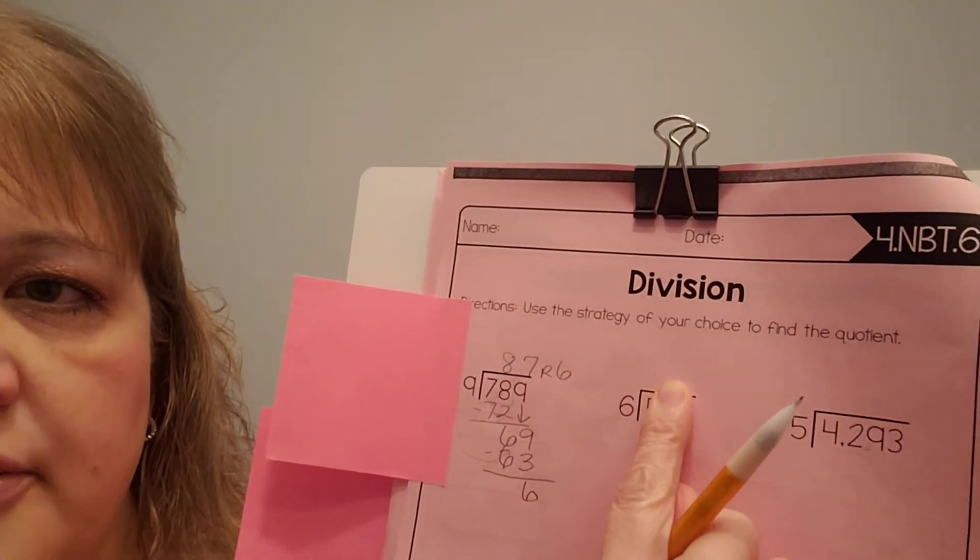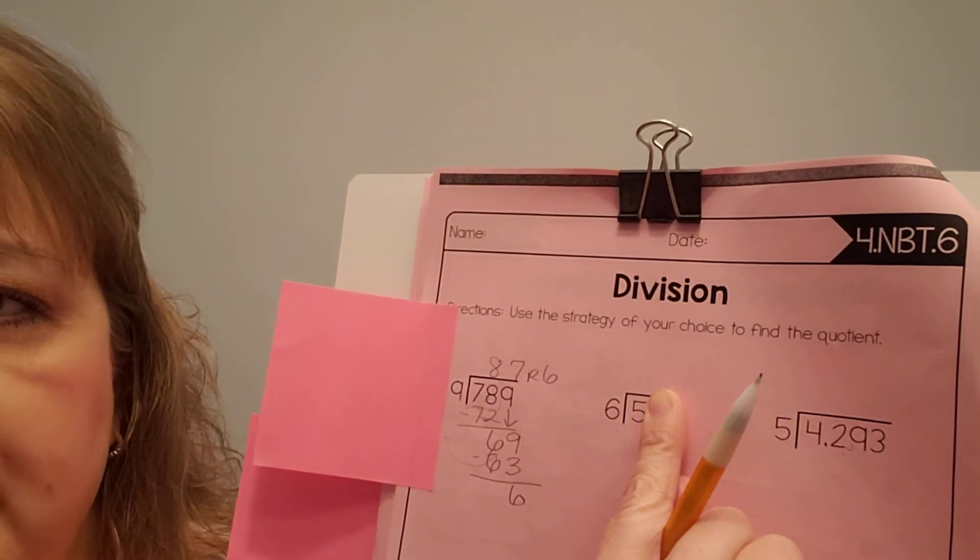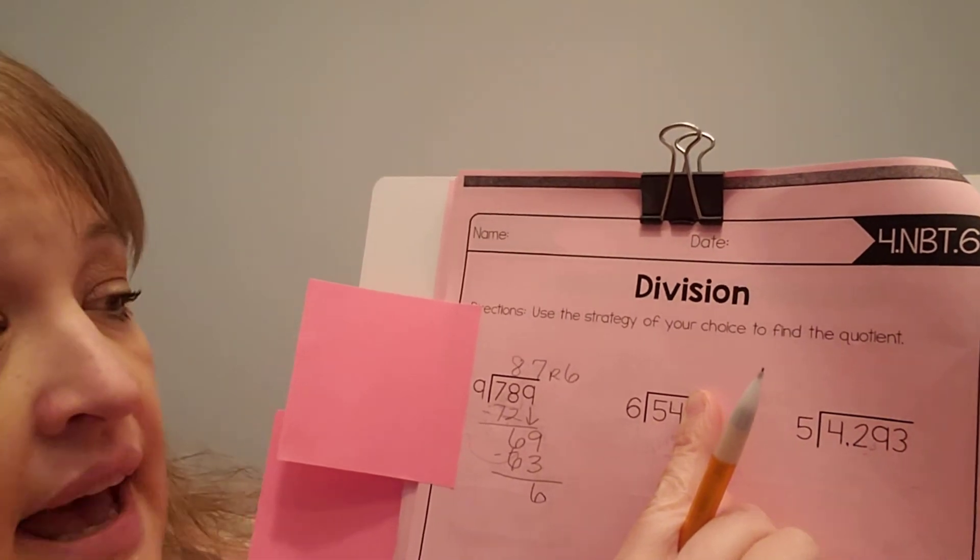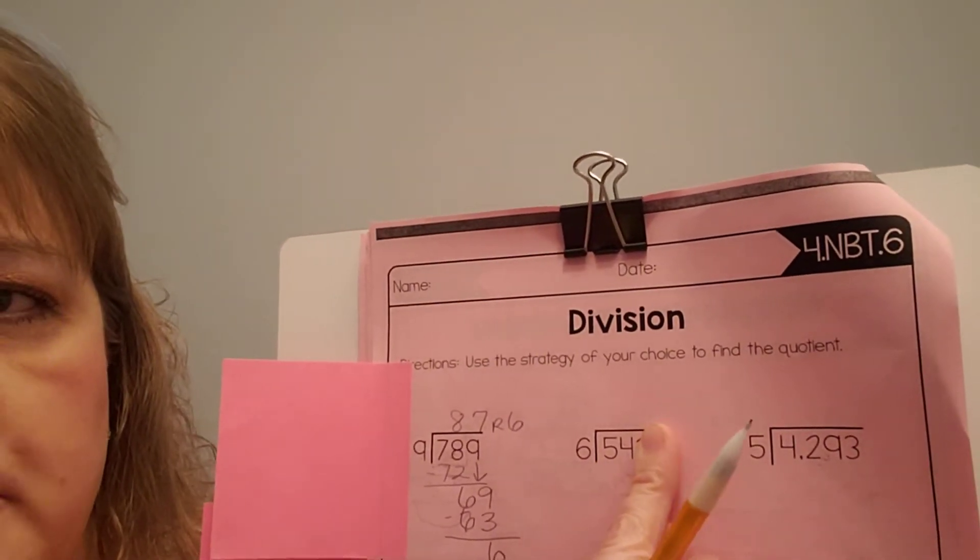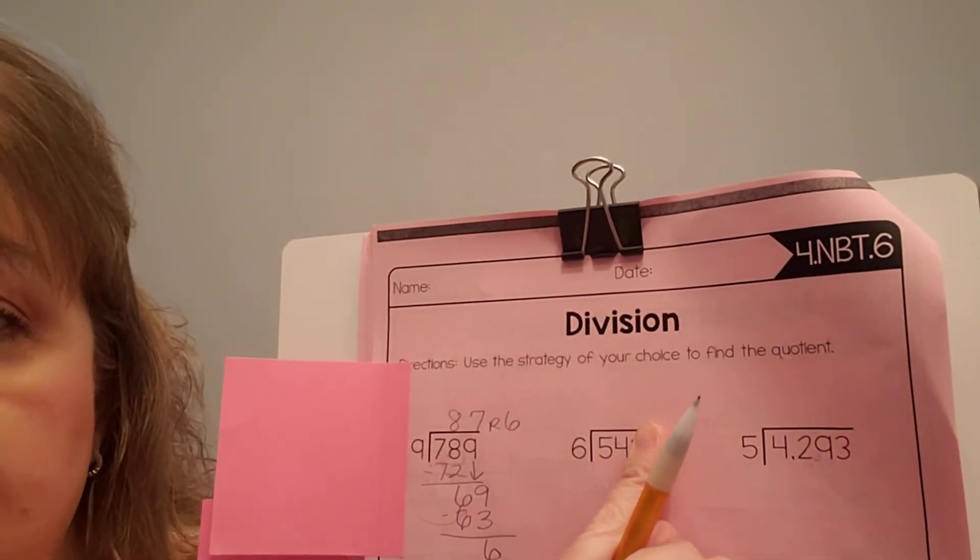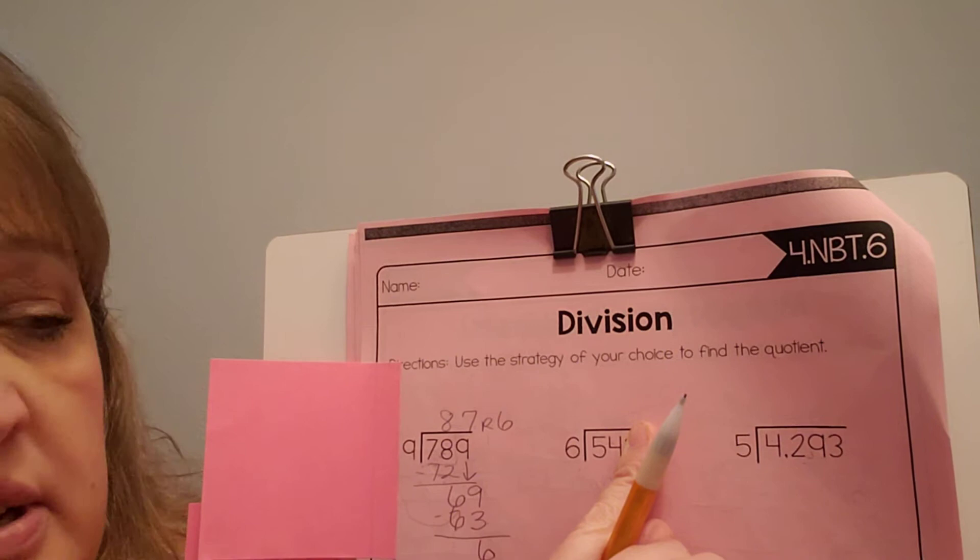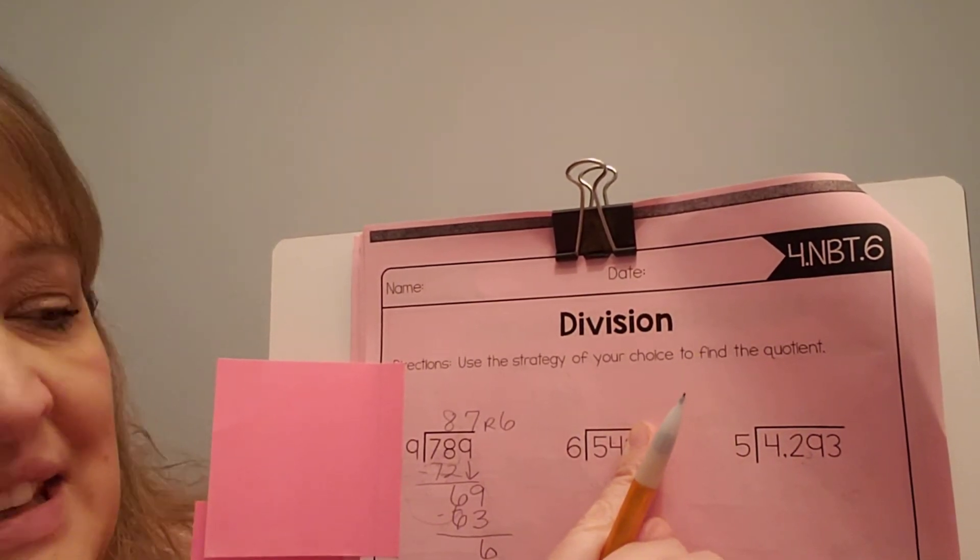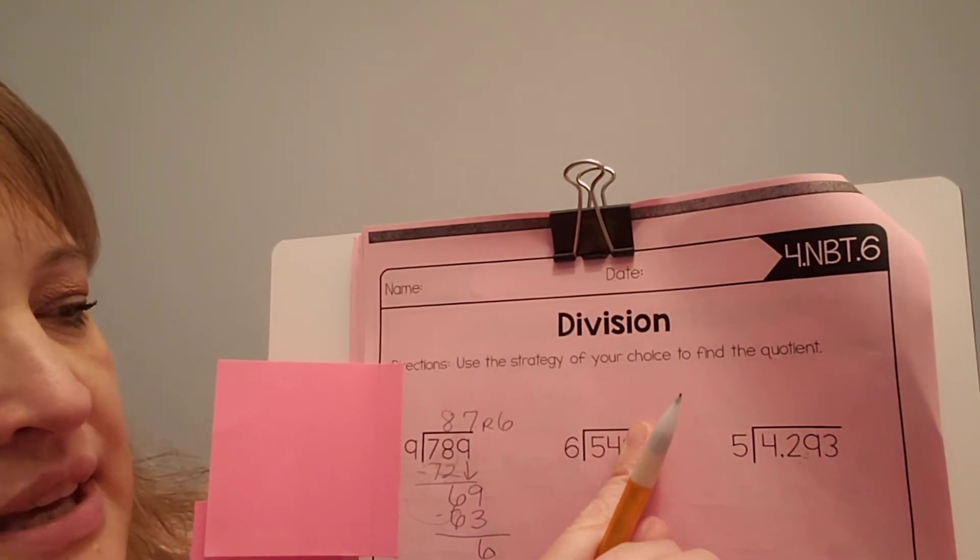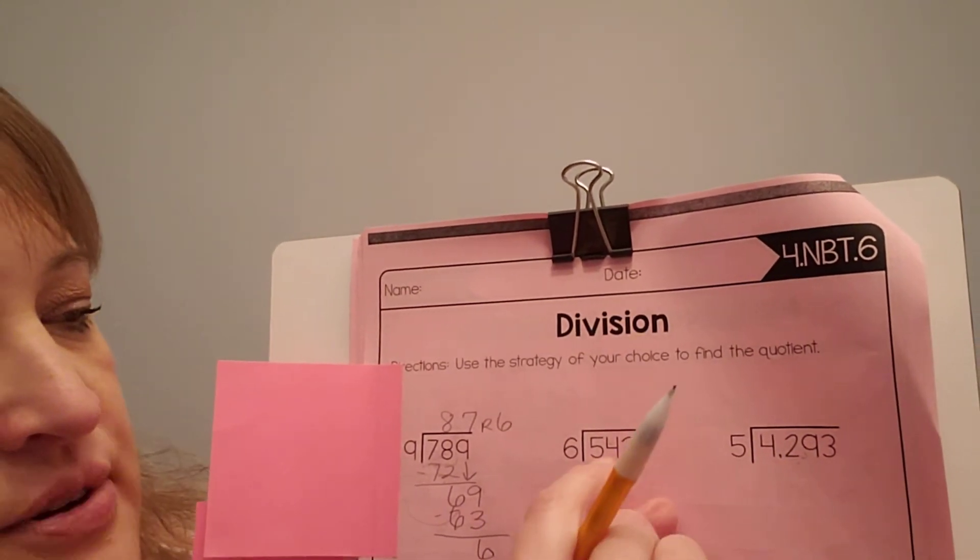All right, let's try the next one. What's the first thing we do? Cover up all the numbers except for the first one. Can 6 fit into 5? Nope. Can 6 fit into 54? Yes. How many times? Well, we have to think about our multiplication. 6 times 6 is 36. 6 times 7 is 42. 6 times 8 is 48. I'm getting closer. 6 times 9 is 63.